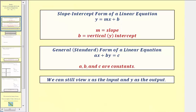The general form of a linear equation, sometimes referred to as the standard form, is given by ax plus by equals c. Notice how for general form, the x and y terms are on the left and the constant is on the right. Unfortunately, when a linear equation is in this form, the values of a, b, and c often don't tell us much about the graph. In this form, a, b, and c are constants, but we can still view x as the input and y as the output. Just remember, a vertical line is the only line that's not a function.